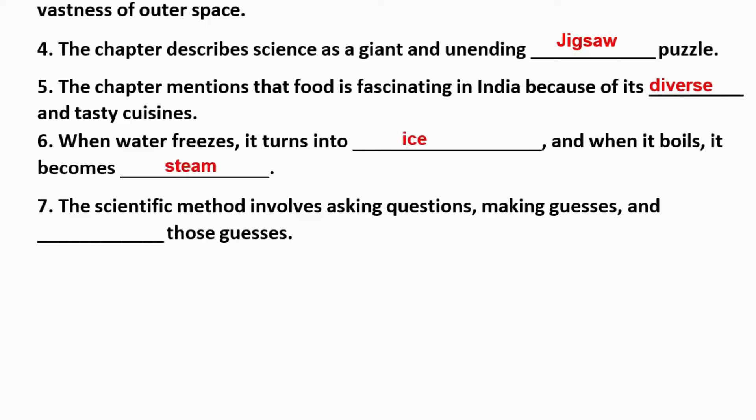Question 7: The scientific method involves asking questions, making guesses and __ those guesses. After making guesses you have to test them, so the answer is testing those guesses.